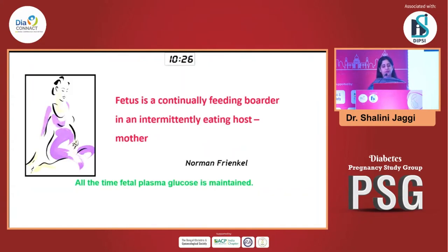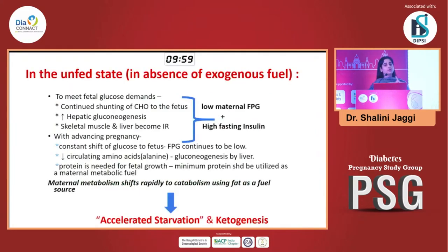This clearly tells us why all these metabolic shifts are occurring: the fetus needs its nutrition continuously, but the mother is not eating 24 by 7. So the fetus is actually a continuously feeding organism in the body of the intermittently eating mother, and all this while the fetus needs its nutrients all the time. Fetal plasma glucose has to be maintained for growth. So what happens is when the mother is not eating — in the unfed state — the fetal glucose demand has to be met. Maternal metabolism will change to shunt glucose to the fetus; hepatic gluconeogenesis increases and peripheral insulin resistance will increase so that all this glucose can be sent to the baby. As a result, in a normal pregnancy, maternal fasting plasma glucose is low and fasting insulin levels are high.